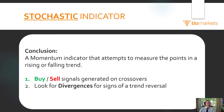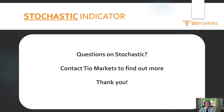In conclusion, the stochastic indicator is a momentum indicator that attempts to measure the points in a rising and falling trend. Buy and sell signals are generated on crosses, and you should look for divergences for signs of breakouts or trend reversals. For questions on the stochastic, contact TO Markets to find out more. Thank you.